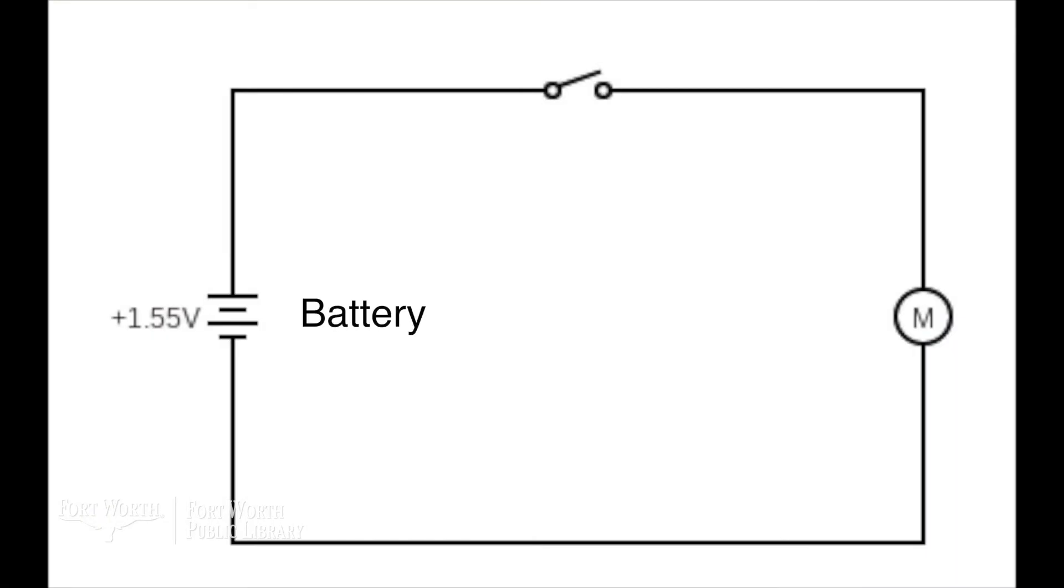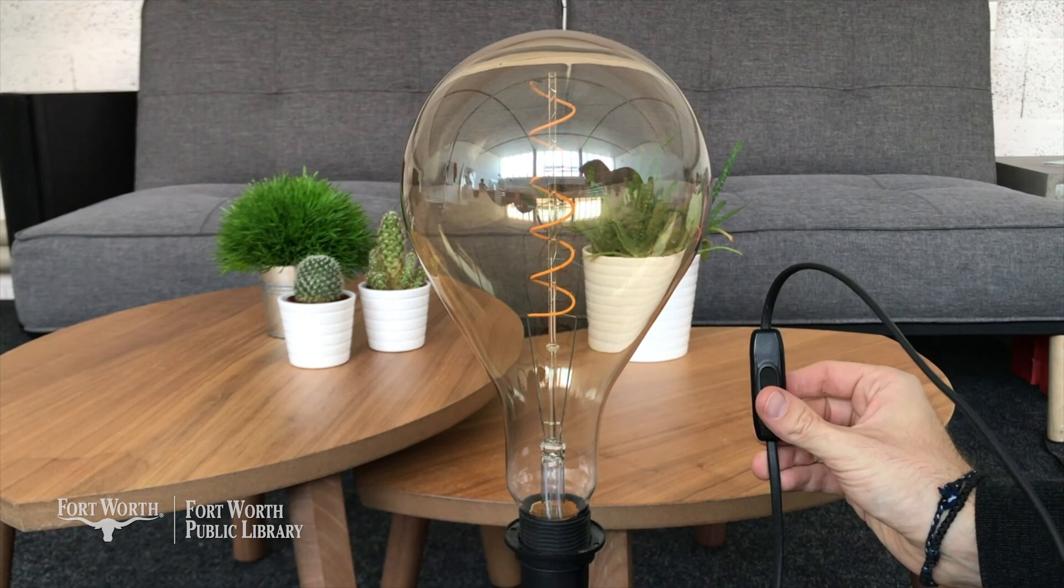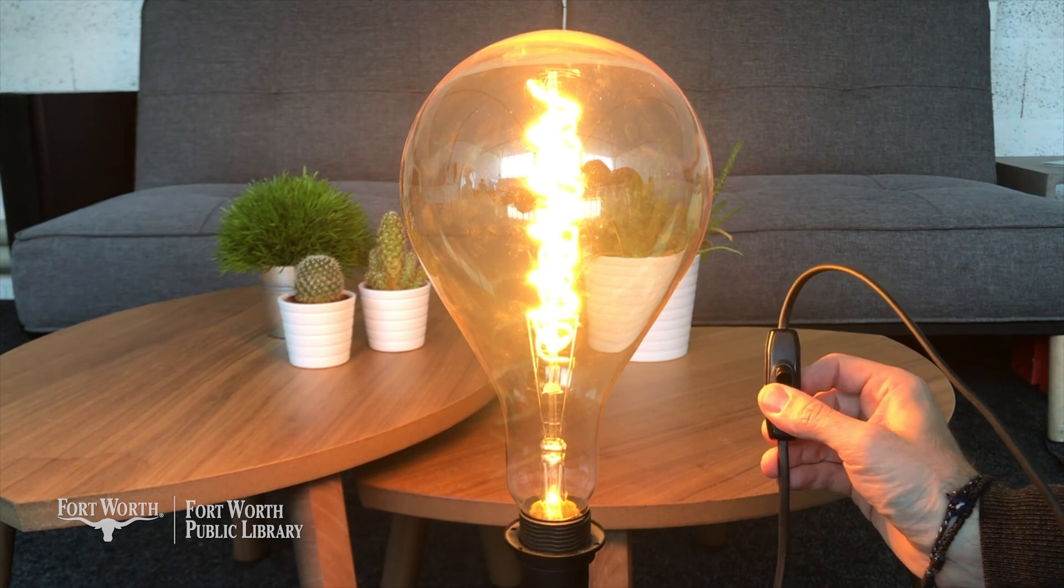In this circuit we have a battery, the motor, and a brad that's acting as a switch. When the brad is not touching the battery, the circuit is open and the electricity cannot flow through the system. When you move the brad so that it's touching the battery, it closes the circuit and allows the electricity to flow through the wires in a loop. Just like at home when the light switch is in the off position, your lights are off because the circuit is open and doesn't allow the electricity to flow. Flip on the light switch and it allows the electricity to flow through the circuit and turn the lights on.